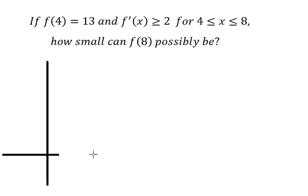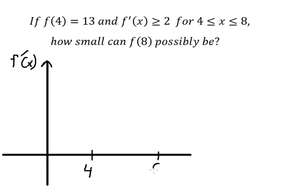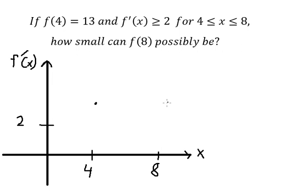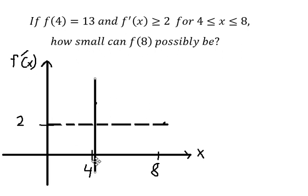We need to graph the function here. This is about the first derivative, from number four to number eight. We know that this one is always greater than or equal to number two. For example, I'll put it like this — between number four and number eight, it should look like this.